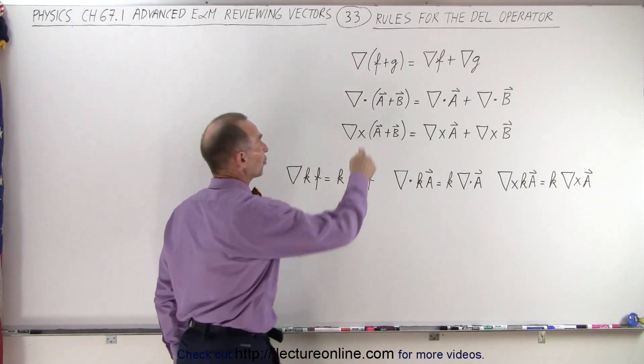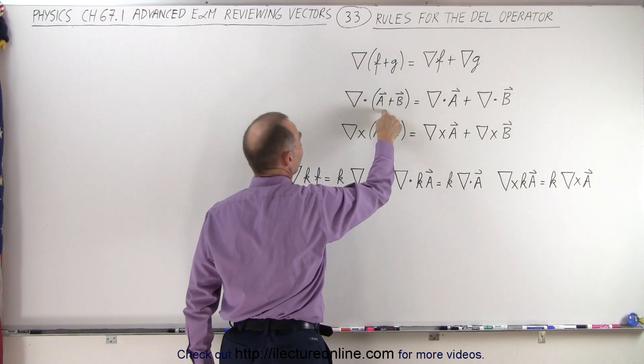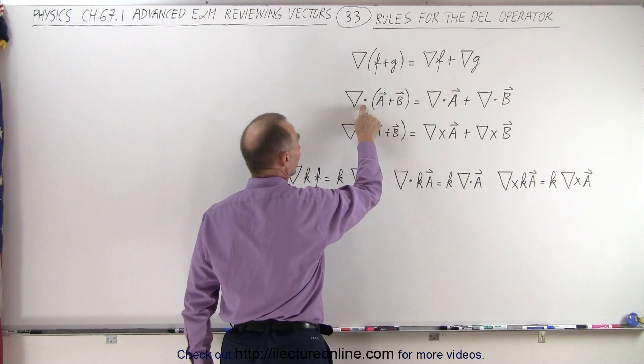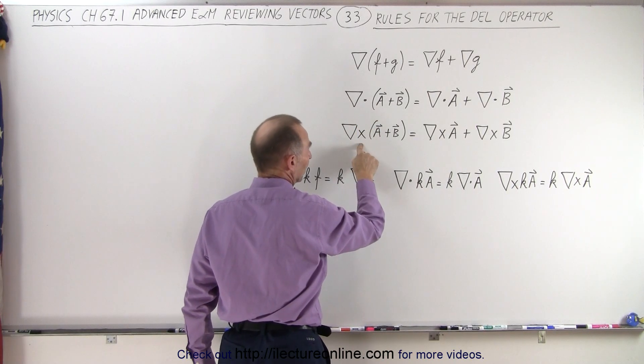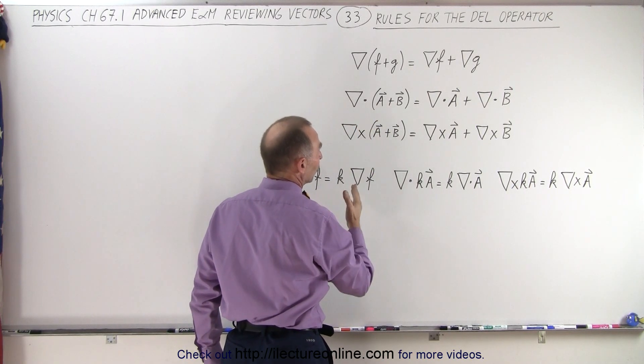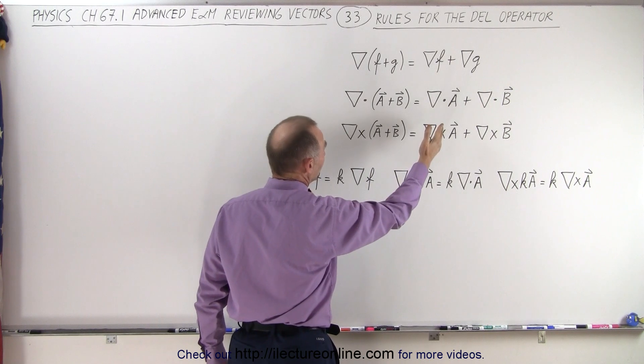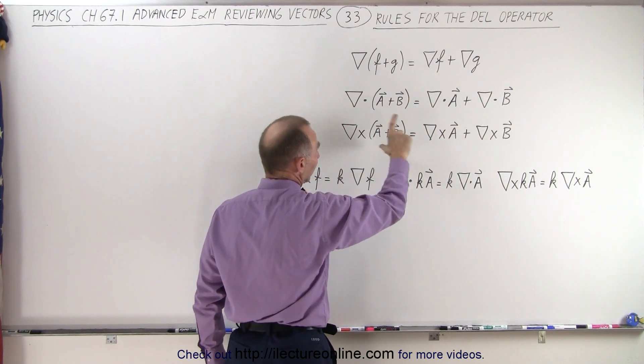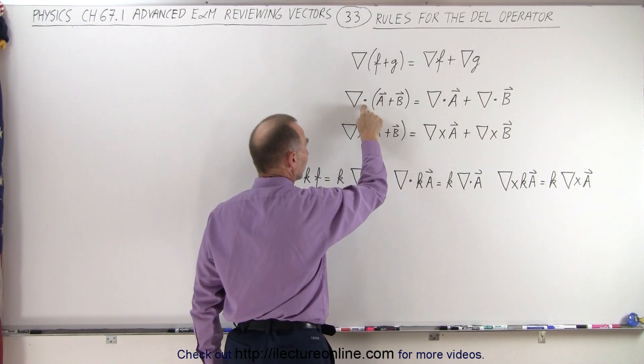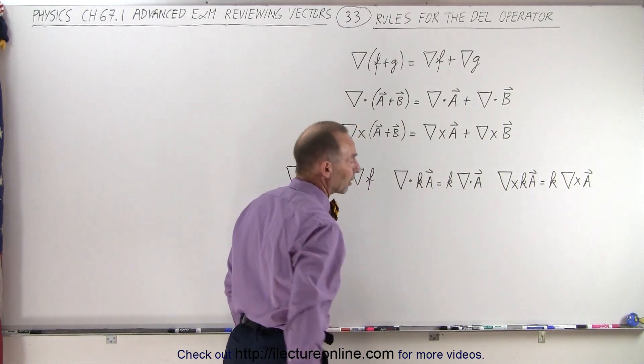And that works for scalar functions as it works on vector functions when we use the dot product and the cross product on these vector functions. So notice that we can use the distributive property on scalar functions and vector functions both for the dot product and the cross product multiplications.